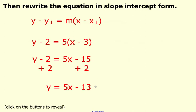Finally, in slope-intercept form, your equation is Y equals 5X minus 13.